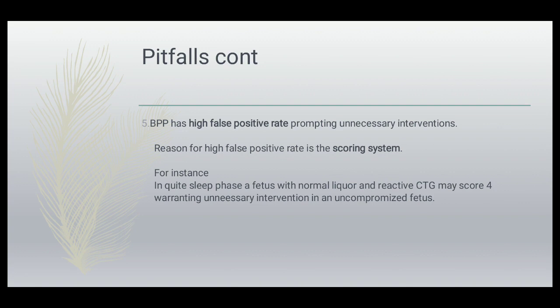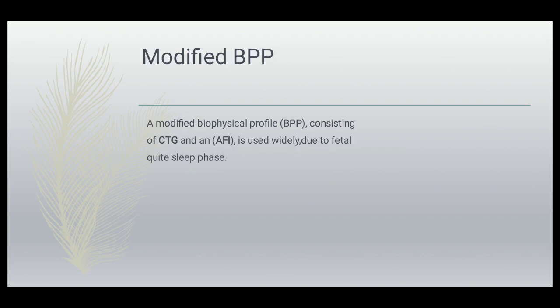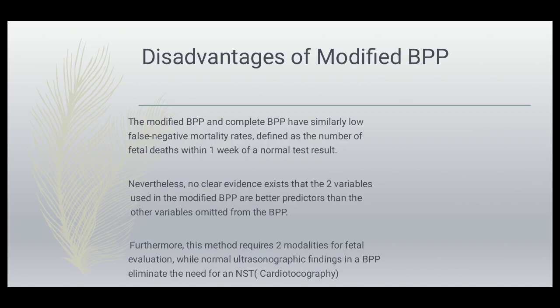The modified biophysical profile consists of CTG and AFI and is widely used due to the issue of fetal quiet sleep phase. Modified and complete biophysical profiles have similarly low false negative mortality rates, defined as the number of deaths within one week of a normal test. However, no clear evidence exists that the two variables in the modified biophysical profile are better predictors than the other variables in the full biophysical profile. Furthermore, this method requires two modalities for fetal evaluation, where normal ultrasonic findings of the biophysical profile can estimate the need for the non-stress CTG as well.